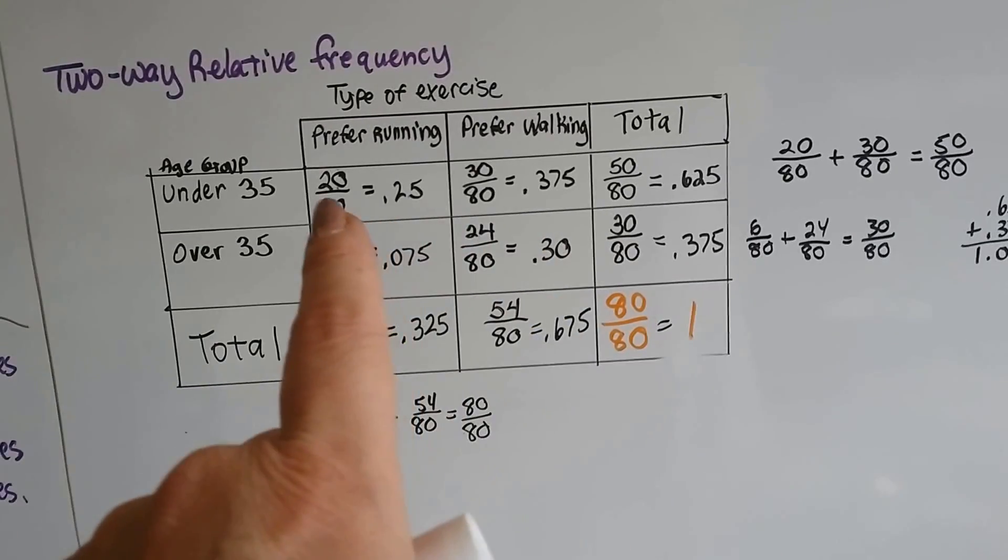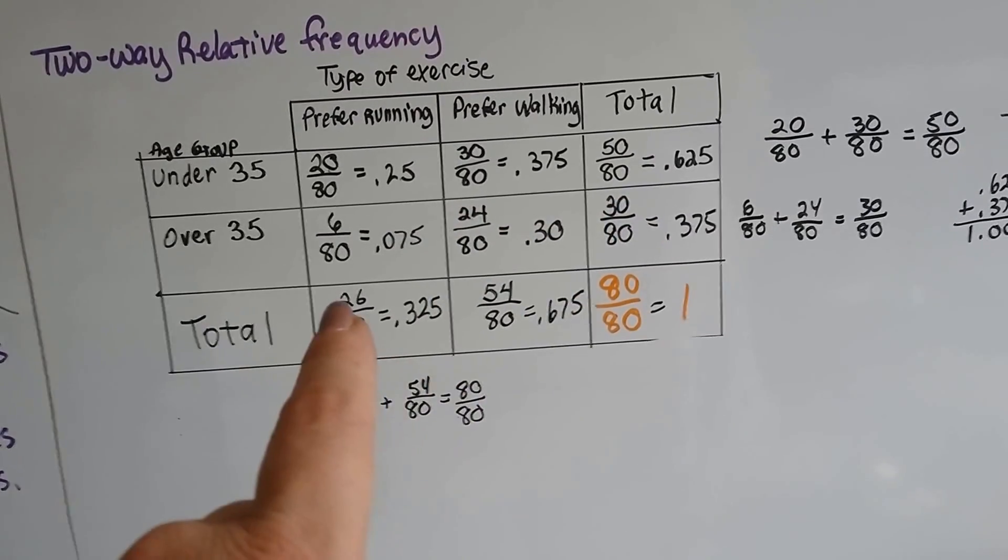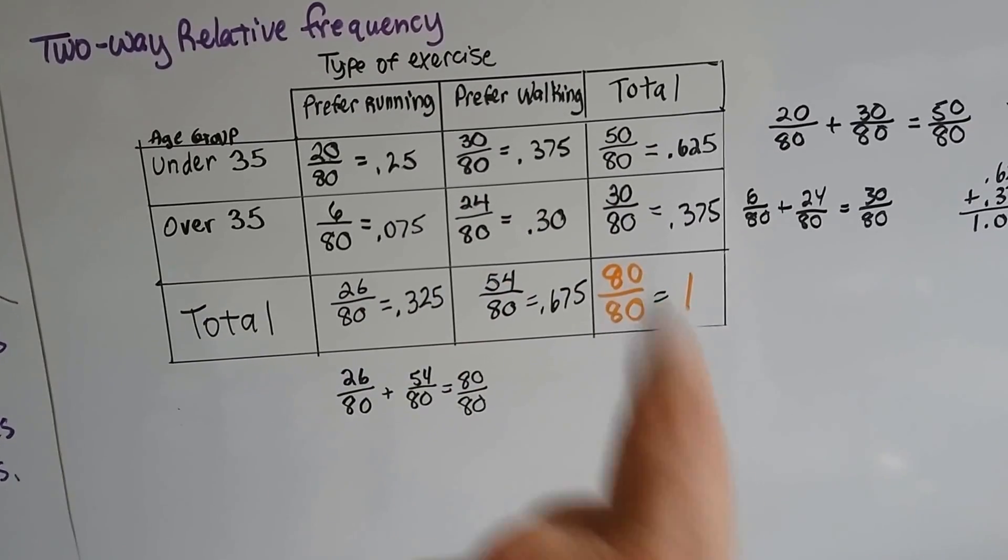And we total the 20 and the 30 to get 50, or the 6 and the 24 to get 30, and the 20 and the 6 to get 26, and the 30 and the 54 to get the 80.